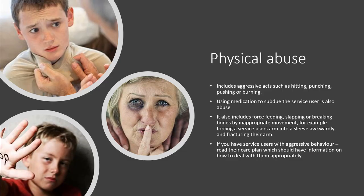Physical abuse includes aggressive acts such as hitting, punching, pushing or burning. These are not always easy to spot, as the abuser can try to hide their physical acts of aggression — for example, punching and burning the stomach, torso or top of the legs, in places not often on show and easily hidden with a T-shirt.